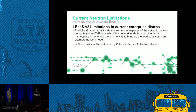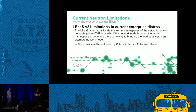This limitation is being addressed in the next Liberty-based release with something called Octavia. Octavia is going to be an actual virtual machine acting as a load balancer with HA capabilities, so when the network node or compute node goes down with DVR, we should be able to migrate Octavia to another node and the load balancer will continue to work in a seamless fashion.